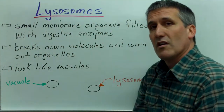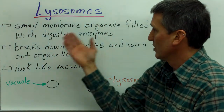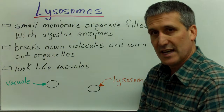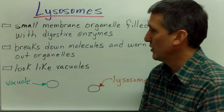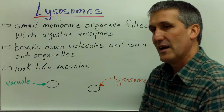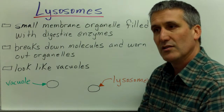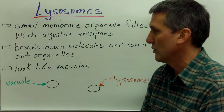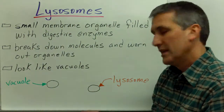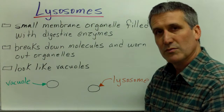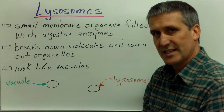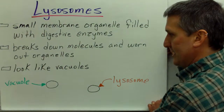The next structure are lysosomes, which are small membrane organelles filled with digestive enzymes. They're basically vacuoles filled with digestive enzymes. They break down molecules and break down old and worn out organelles so that the molecules can be recycled. They basically look like vacuoles — they're indistinguishable except that the lysosome has digestive enzymes in it.